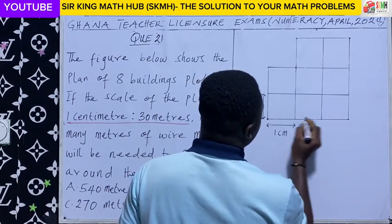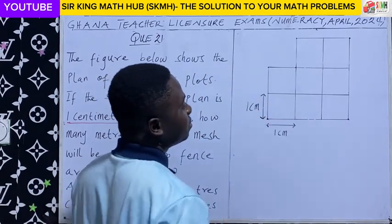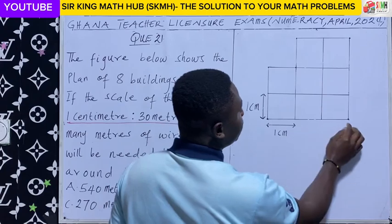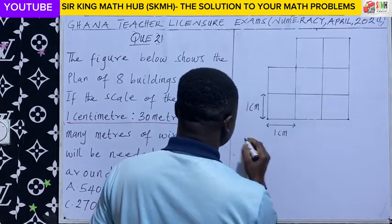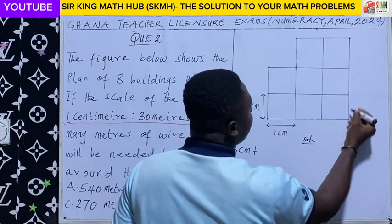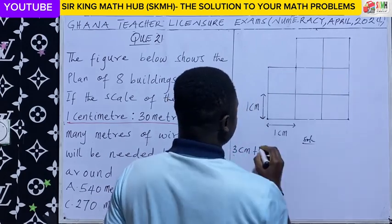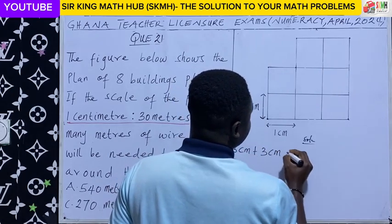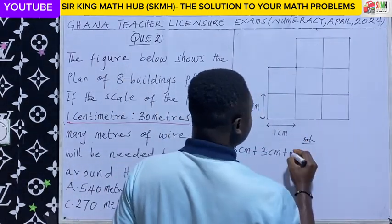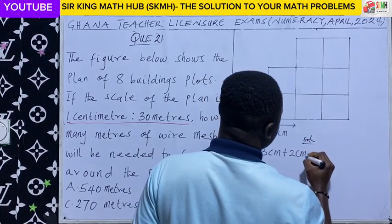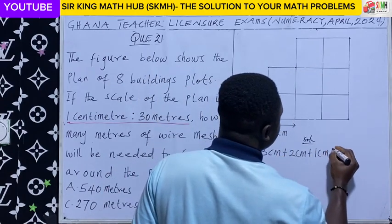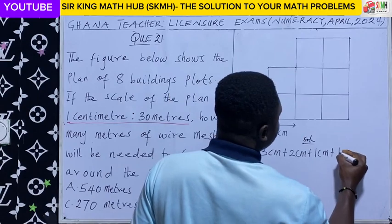We need to fence around this particular plot. From this point to this point, each building plot has a length of 1 cm, so from this point to this point we have 1, 2, 3 — so 3 cm. From this point to this point, we also need 3 cm of wire mesh. From this point to this point, 1 cm will be needed.